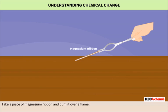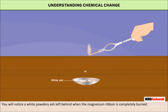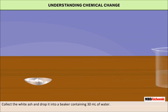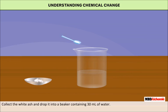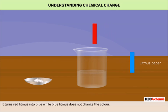Take a piece of magnesium ribbon and burn it over a flame. The magnesium ribbon burns with a brilliant white light. You will notice a white powdery ash left behind when the magnesium ribbon is completely burnt. Collect the white ash and drop it into a beaker containing 30 ml of water. Stir the water thoroughly and test it with litmus paper — it turns red litmus into blue, while blue litmus does not change color.